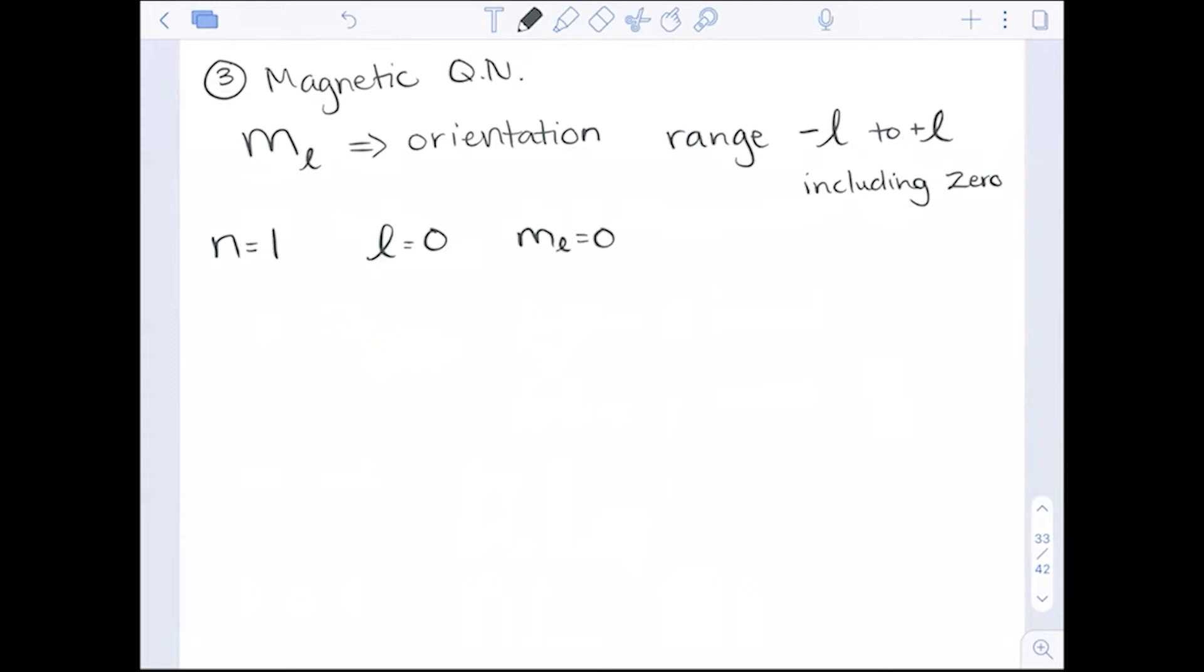What that means is if I think of a 3D plane, x, y, and z. If I put a sphere there right in the middle, there's no way that I could rotate that sphere to make it look different. Think about rotating a ball. It's symmetrical, right? So there's only one orientation for that 1s orbital.